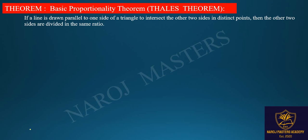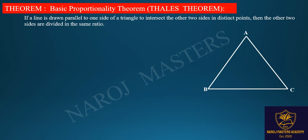The theorem says that if you draw a triangle ABC and draw one line DE which is parallel to one side of the triangle, intersecting at point D and E on the other two sides AB and AC, then the other two sides are divided in the same ratio — these two sides divided by these two sides are in the same ratio.